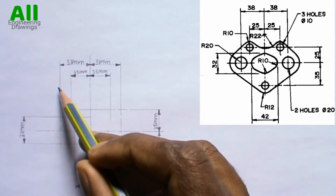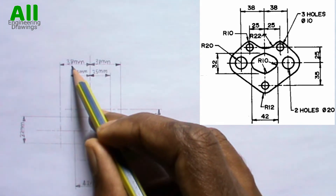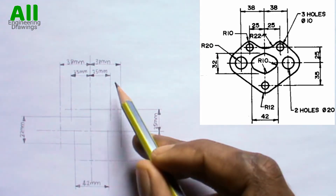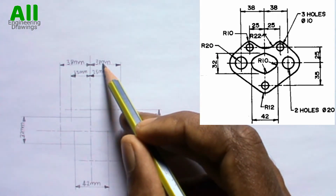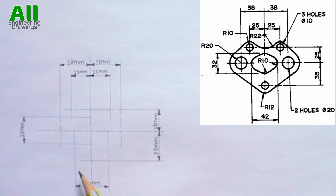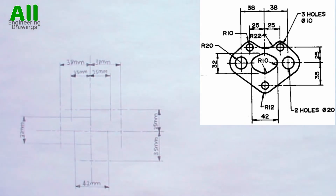The distance between this line and this line is 38mm. The distance between this line and this line is also 38mm. The distance between this line and this line is 42mm.